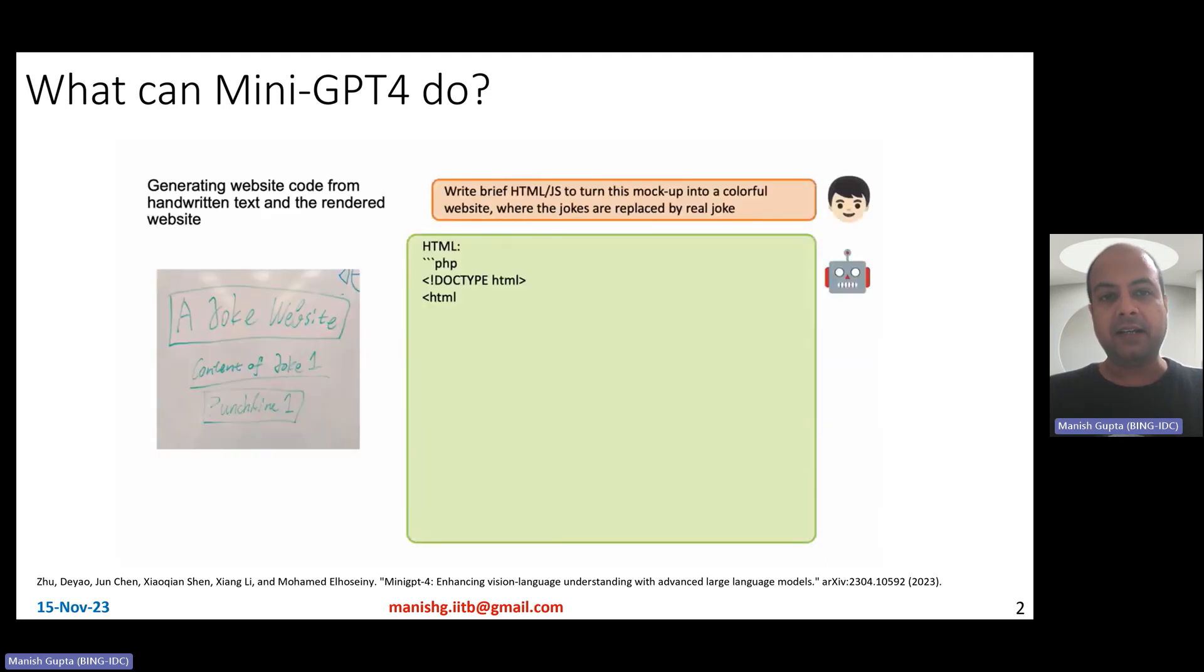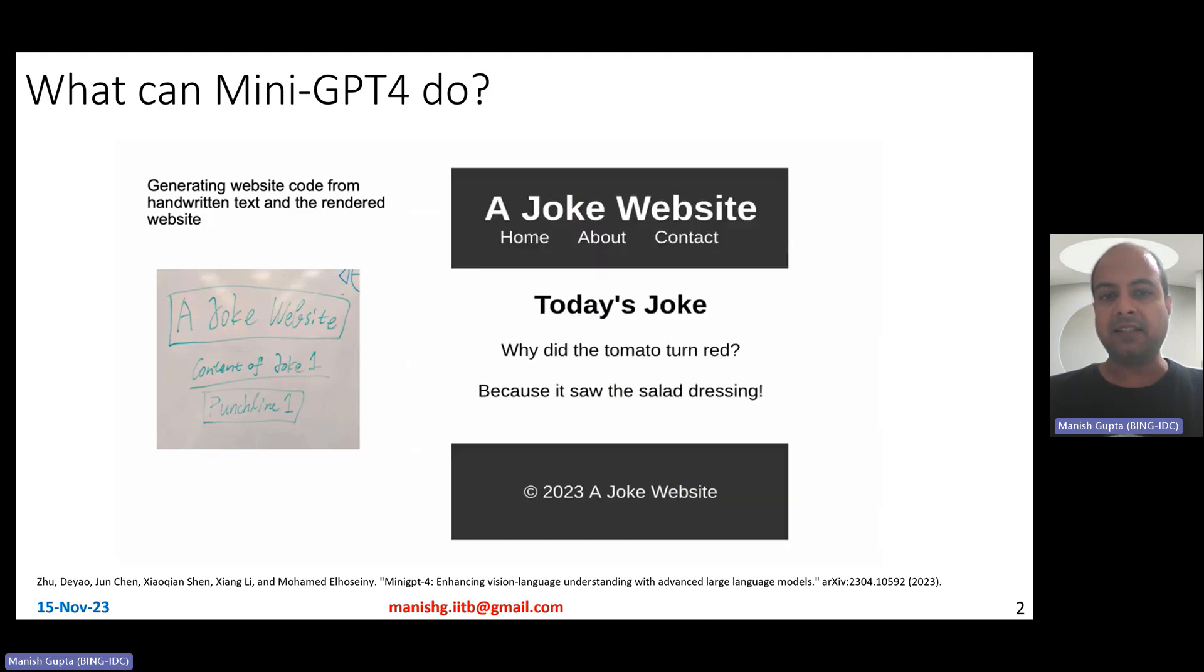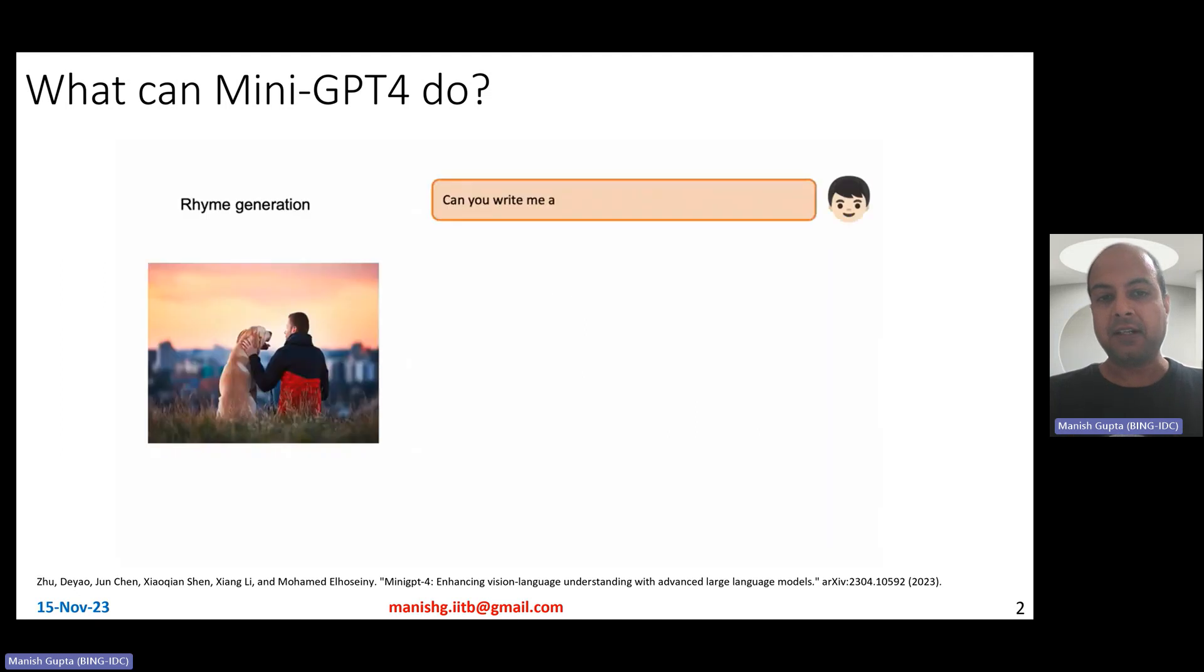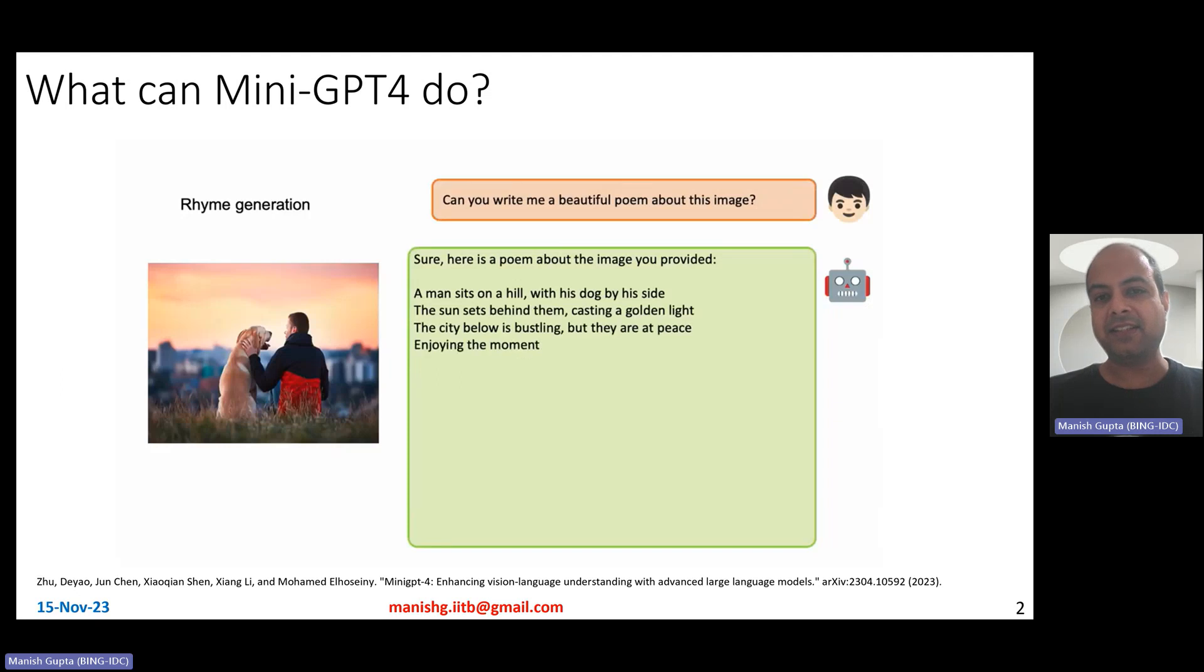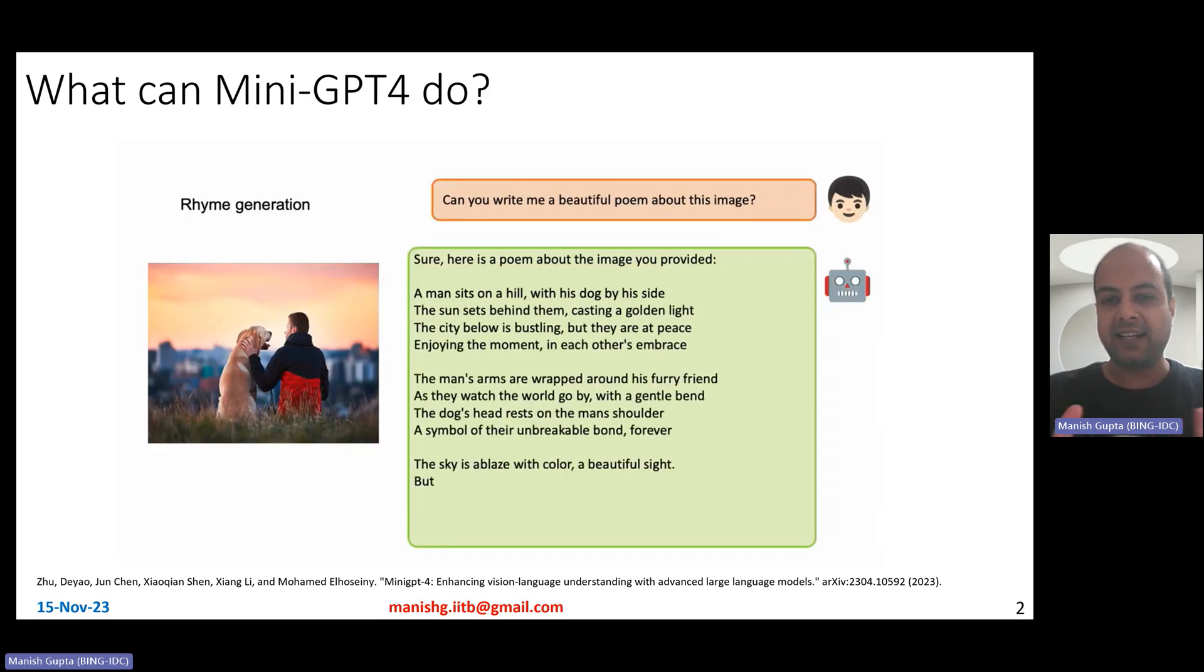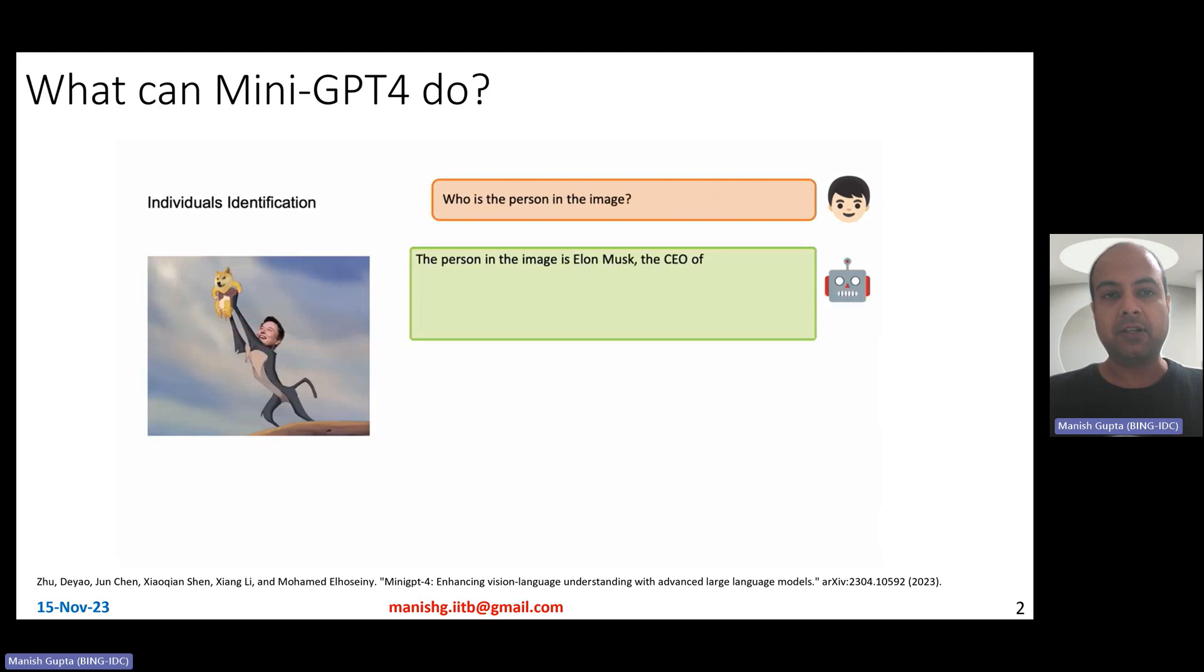It can take a handwritten text and come up with website code, so as to nicely render it as an HTML and JavaScript combination. That's the code and that's the visualization if you want to create that website. It can also create rhymes, so it can take an image and then say write a beautiful poem about this image, and that nicely comes up with these lines of awesome poem relevant to the image.